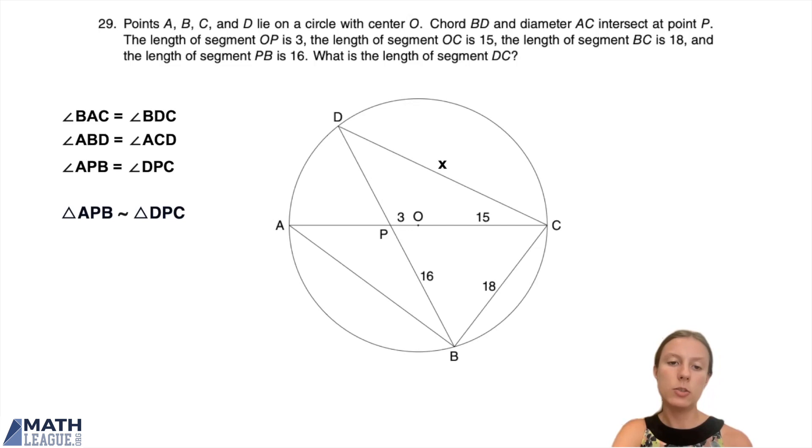We need two things to be able to find DC now. It corresponds to side AB in the other triangle, APB. We don't actually know AB, so we're going to need to find it. And then we also need to know the ratio of similarity between the triangles, right? They're not the same size, they're just the same shape, so we need to know the ratio of the sizes.